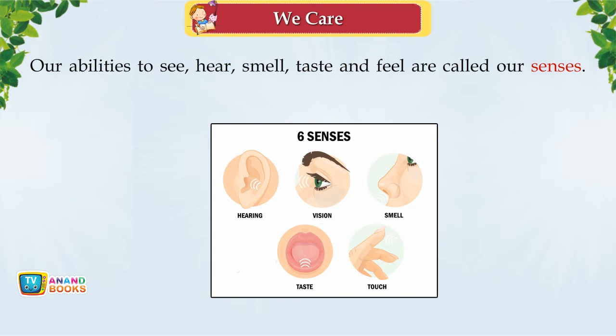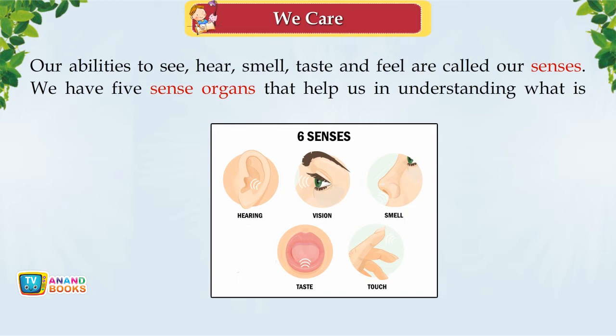Our abilities to see, hear, smell, taste and feel are called our senses. We have five sense organs that help us understand what is happening around us. Eyes, ears, nose, tongue and skin are our five sense organs.